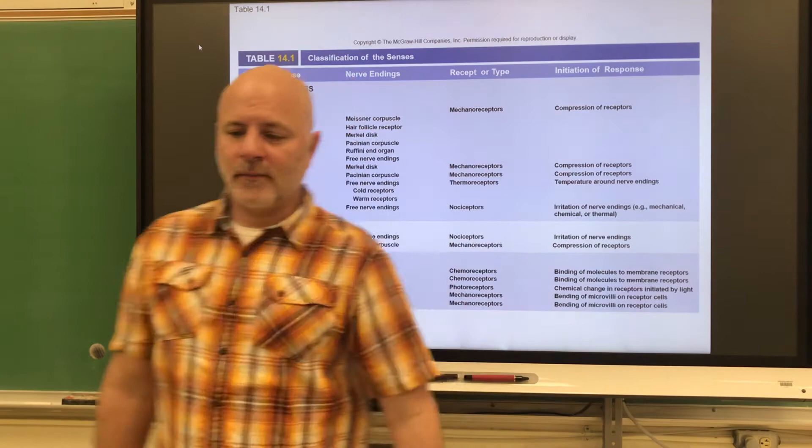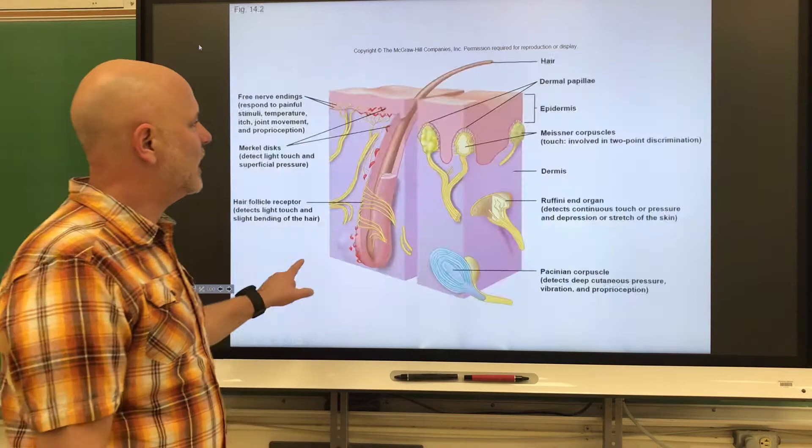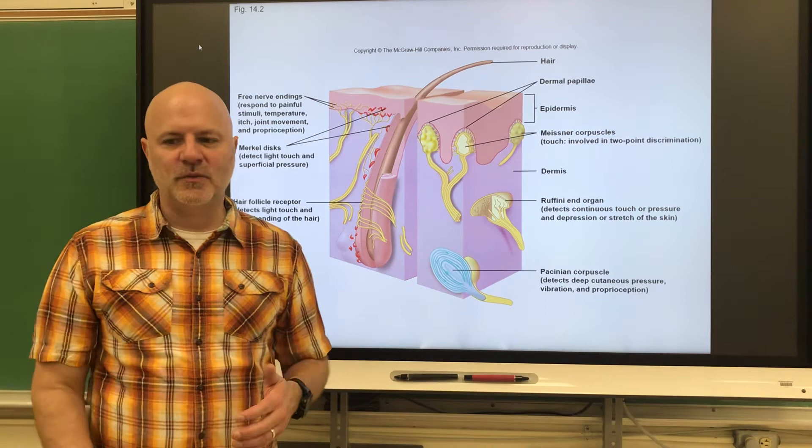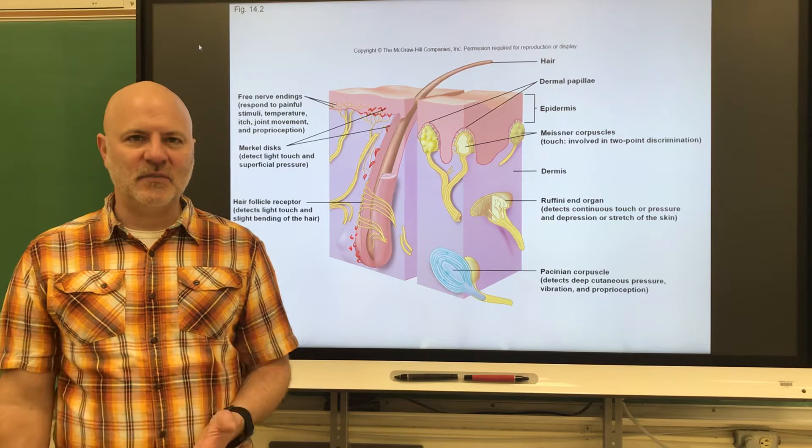Let's look at a classification by structural complexity. Some receptors are simple receptors — modified dendritic endings of sensory neurons. Then we have complex receptors, which are our sense organs used in vision, hearing, equilibrium, taste, and smell. We'll cover those complex receptors in Chapter 15.